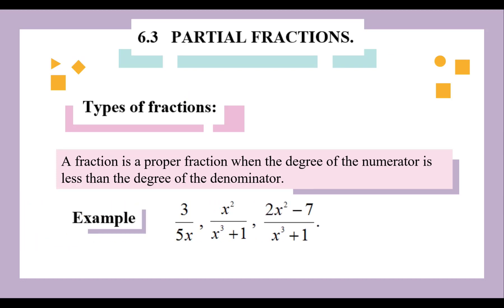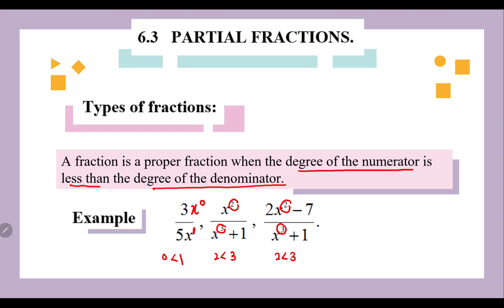First, we're going to look at what is a proper fraction. A proper fraction is when the degree of the numerator is less than the degree of the denominator. For example, 3 over 5x: the degree of the numerator is x to the power of 0 and the degree of the denominator is 1. Notice the degree of the numerator is less than the degree of the denominator. Same goes to x squared divided by x cubed plus 1 — 2 is less than 3. We call this a proper fraction.